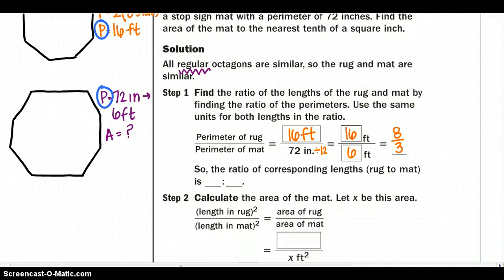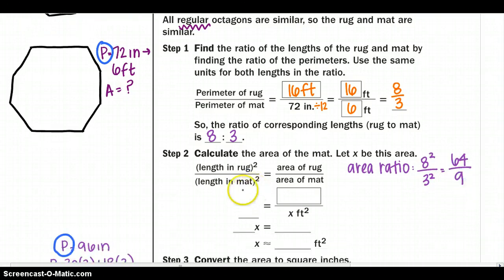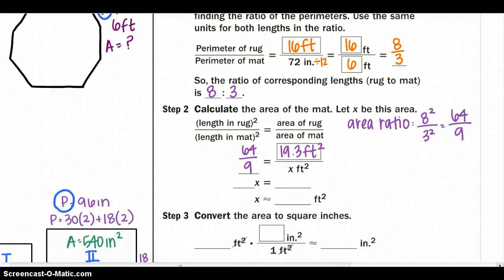Now I need to find my area ratio. I will just remember square the top and the bottom. So my area ratio would be 64 over 9. I'm just going to plug it in - 64 over 9 equals 19.3 feet squared over x squared feet squared. I'm going to cross multiply again and I would get 64x equals 173.7. So my area will be approximately 2.714 feet squared.